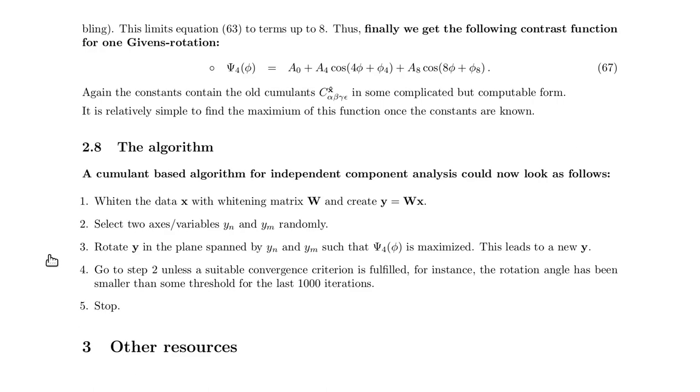Okay, so if you have that, we can now devise the following algorithm. First we whiten the data, so we remove the mean and correct the variances such that the data is guaranteed to be uncorrelated.